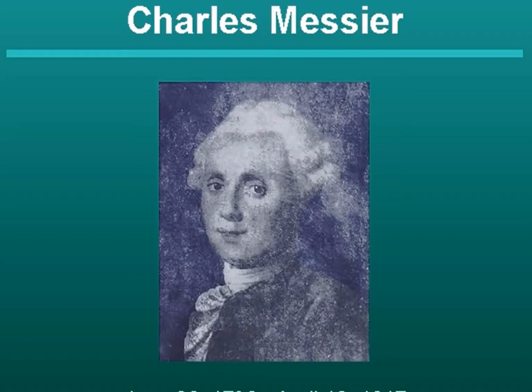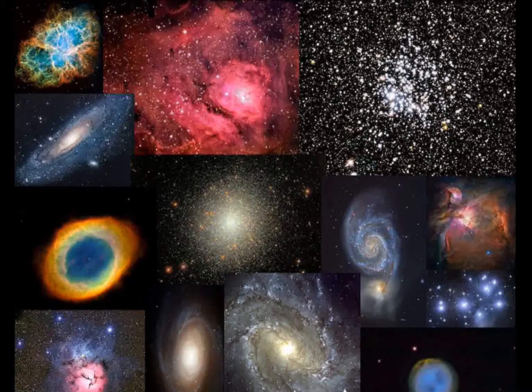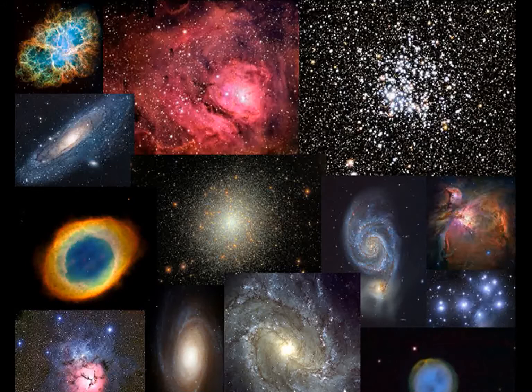Messier was a French astronomer a couple of hundred years ago who was known as a voracious comet hunter. A list of 110 Messier objects was compiled, not for being comets, however, but for being other than. This list of galaxies, nebulae, and star clusters is still widely used today.